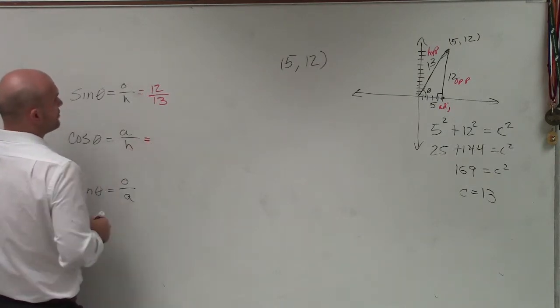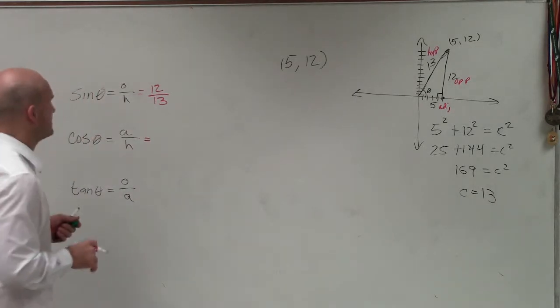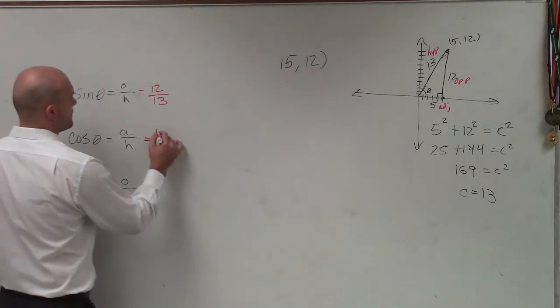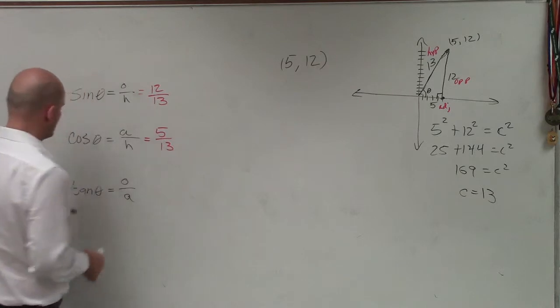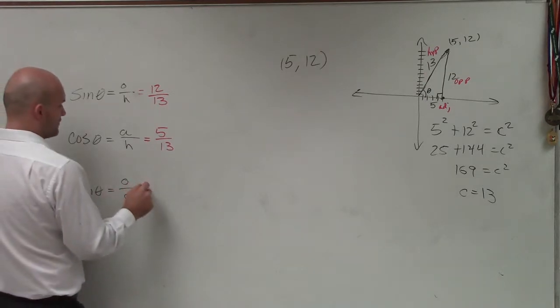The adjacent side is going to be, what's the adjacent side? It's 5 over 13. And the tangent is going to be opposite over adjacent, which would be 12 over 5.